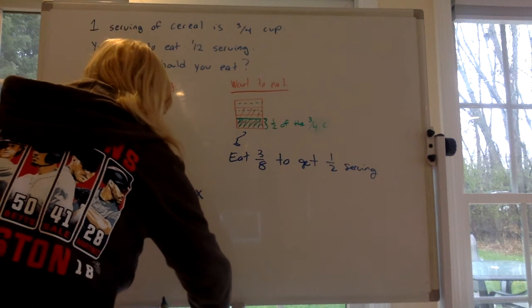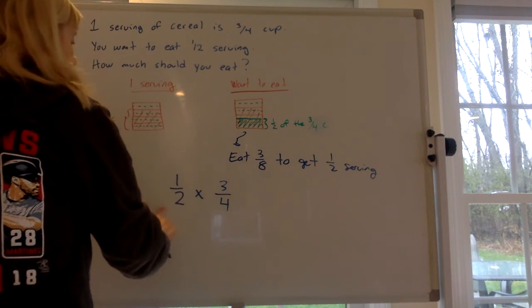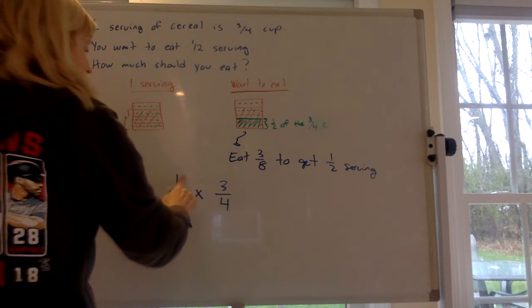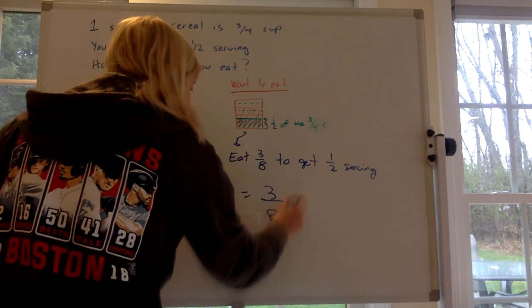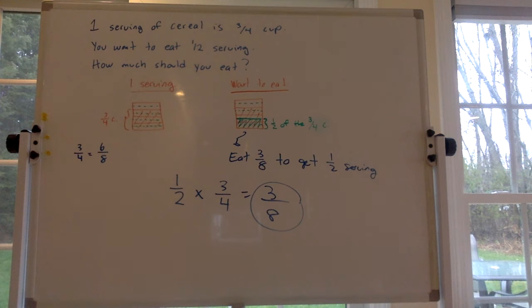You could have just left it as three-fourths. One half of the three-fourths cups. One times three is three. Two times four is eight. You also could have done one half of six-eighths and you still get three-eighths.